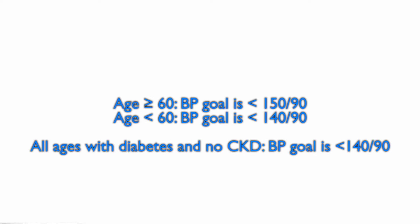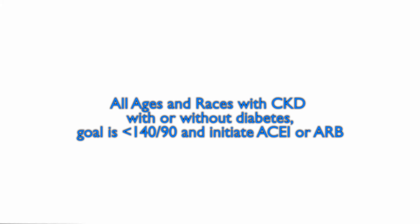For all ages with diabetes and no chronic kidney disease, the blood pressure goal is less than 140 over 90. For all ages and races with chronic kidney disease, with or without diabetes, the goal is also less than 140 over 90, and you initiate ACE inhibitors or angiotensin receptor blockers.